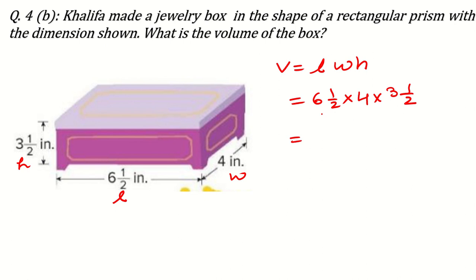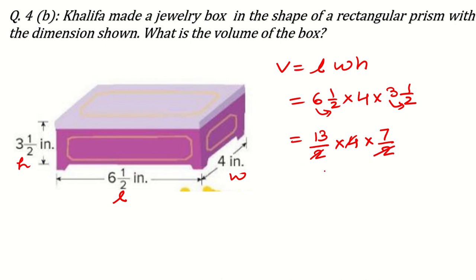Some numbers are in mixed fraction form, so convert them: 6 and a half becomes 13 over 2, and 3 and a half becomes 7 over 2. So we have 13 over 2 multiplied by 4 multiplied by 7 over 2. The 2s cancel with 4, and 13 times 7 equals 91. The answer is 91 cubic inches.